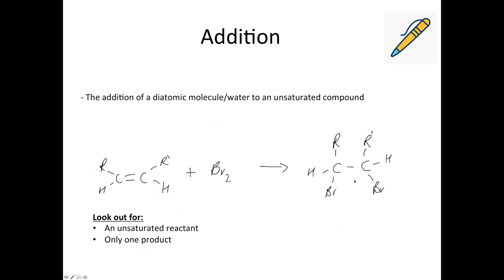The next reaction type is addition. An addition reaction is where you are adding a diatomic molecule or water to an unsaturated compound — unsaturated means it's got double carbon-to-carbon bonds, like this alkene. In this particular reaction, we're adding bromine, and you're only forming one product. So in an addition reaction, you'll be adding two things and making one thing. The double bond breaks open and the bromines add to either side — this can be called bromination.